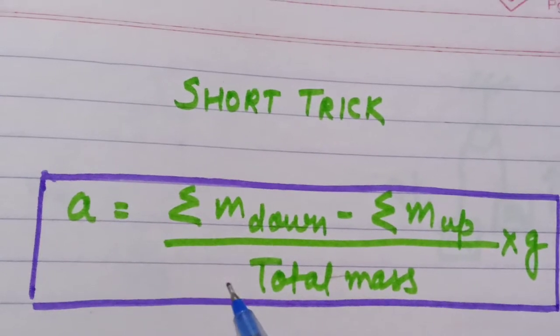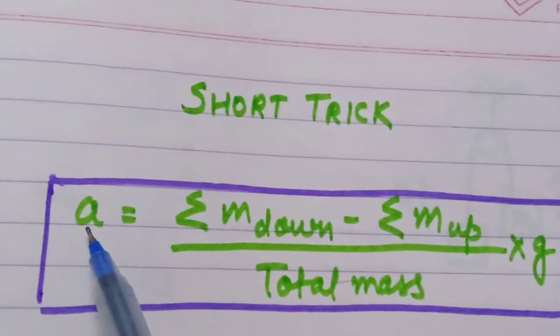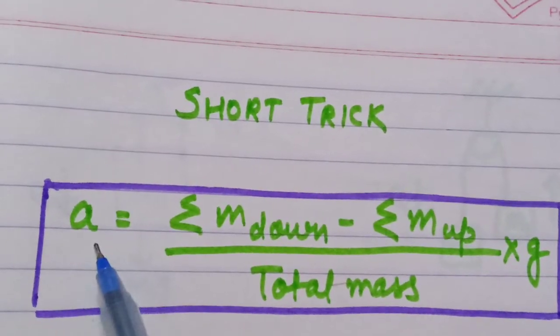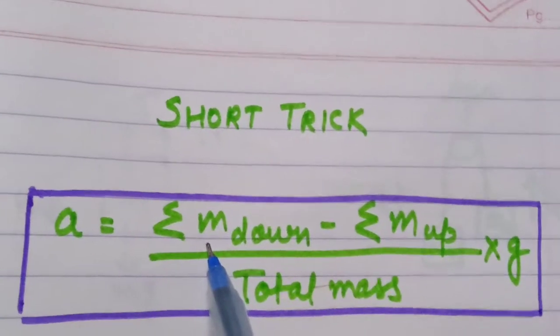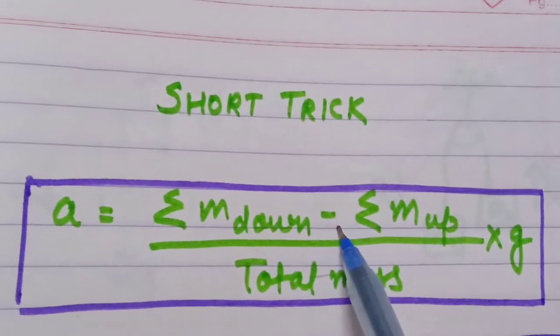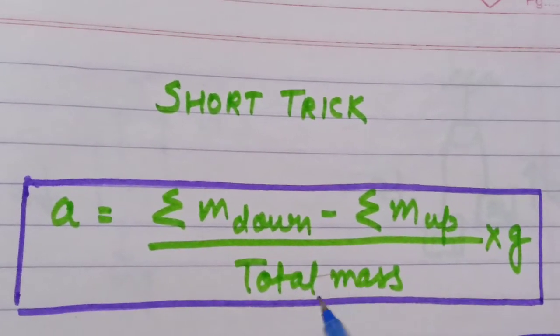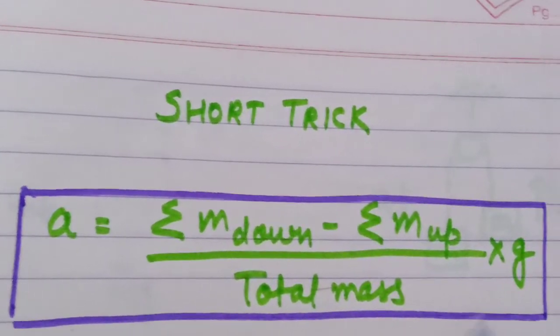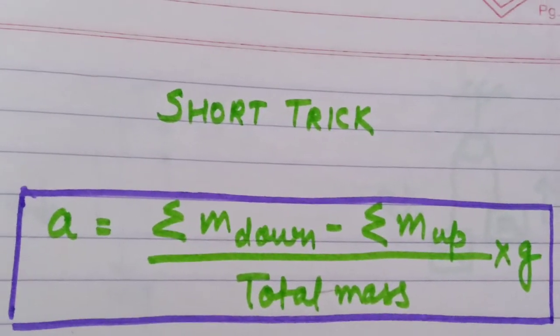This is the short trick which we already discussed in the previous video. Acceleration is equal to all the mass moving downward minus all the mass moving upward, divided by total mass, times gravitational force. Now today we will apply this trick on another condition.